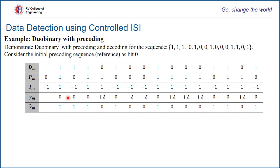To detect or demodulate the original sequence: if the magnitude of ym is greater than 0, decode it as 0; otherwise decode it as 1. In our case, ym takes three levels: 0, plus 2, and minus 2. Magnitude of ym is greater than 0 for plus 2 and minus 2, so those are decoded as 0. Wherever there is 0, it is decoded as 1. This exactly matches the original transmitted sequence. We introduced controlled ISI at the transmitter and completely removed it at the receiver.